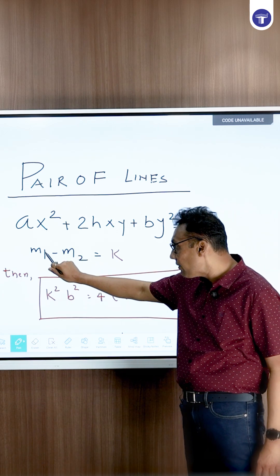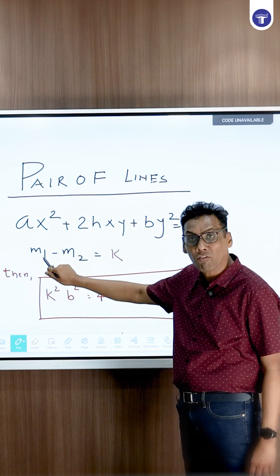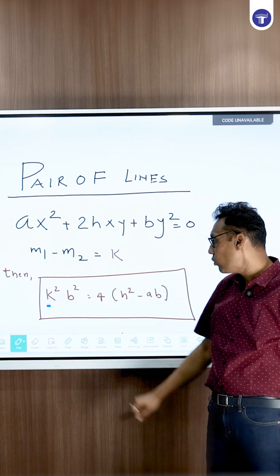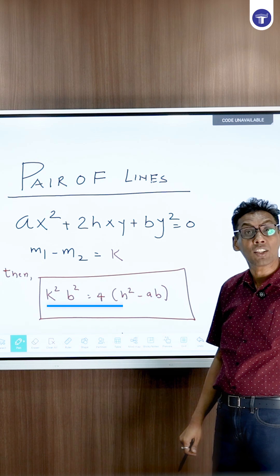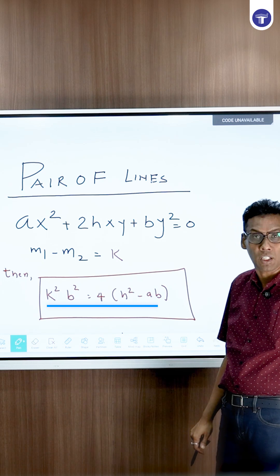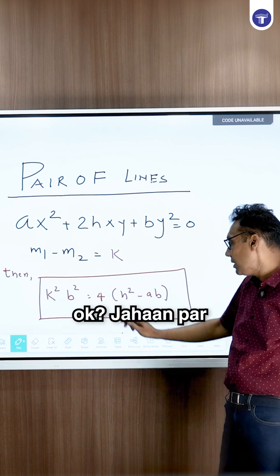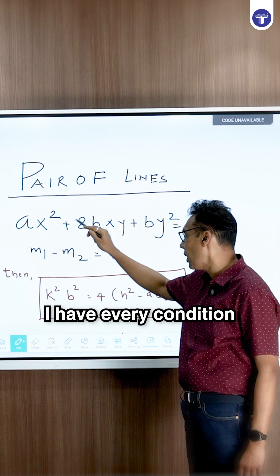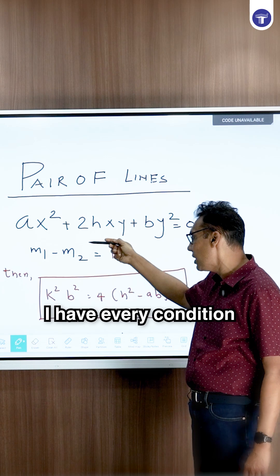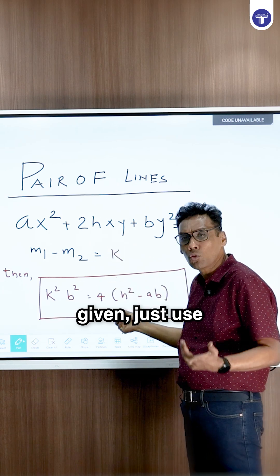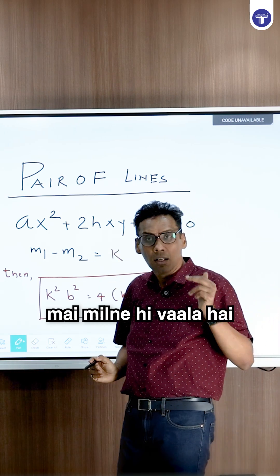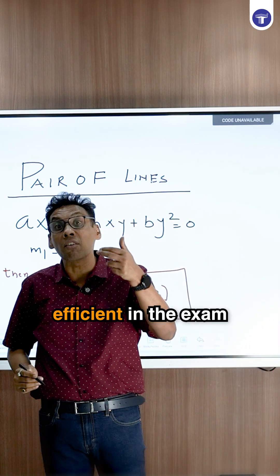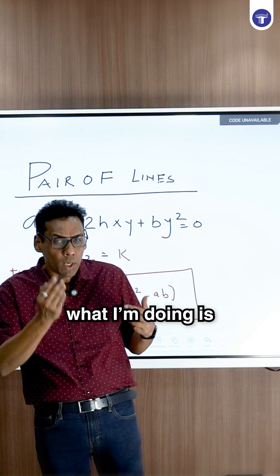What is this condition? If the difference of the slopes m1 minus m2 is k, then k²b² = 4(h² - ab), where b is given, h is given, a is given. You have every condition given — just use it and you get the answer in one minute. These are the methods which make you more efficient in the exam. You should know this.